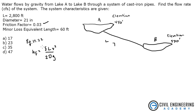Looking at this equation, we know F (friction factor), we know length, we do not know velocity, we know diameter, and we know gravity. So we have two unknowns. The next thing we need to find is HF, the head loss due to friction.